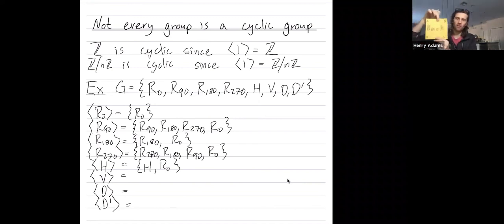Do the vertical flip once, you get this vertical flip, but do it again and you get back where you started, the identity.